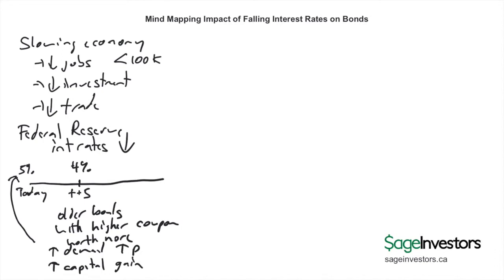So the impact is: if interest rates do fall, bonds currently out in the marketplace are going to be worth more — they're going to increase in price because they're paying a higher coupon and potentially a higher yield. Investors are going to gravitate toward those previously issued bonds over the new ones coming out. I'm keeping this at a simple baseline; there are other factors that go into bond pricing.